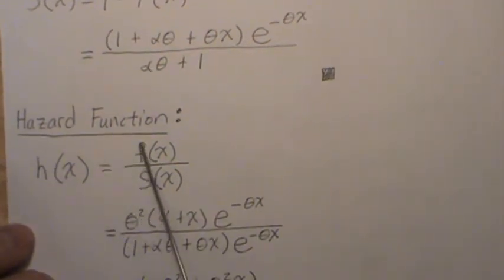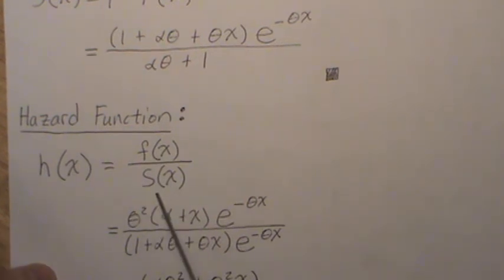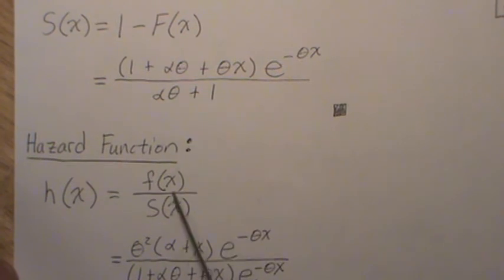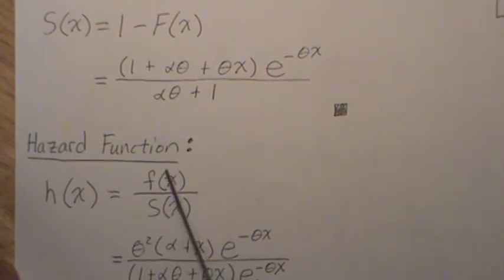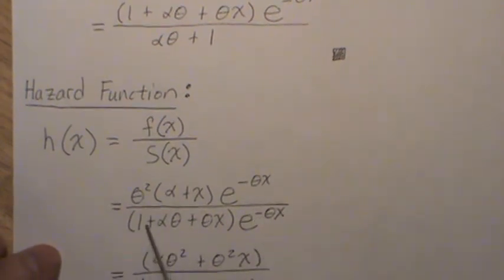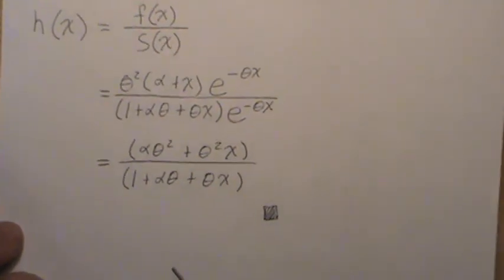So the hazard function, H of X, is the density over the survivor function, and then this piece, the bottom piece, is divided in here and here, so those cancel. And we're left with just the numerators, which is this, the E's cancel, and then I multiply that in, and we get this, and so that's the hazard function.